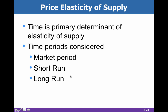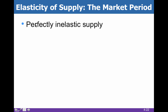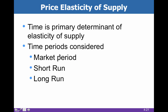The determinants of supply are very simple. There's really only one, and that one determinant is time — specifically, the time that producers have to react. We look at three different time periods: the market period, the short run, and the long run.